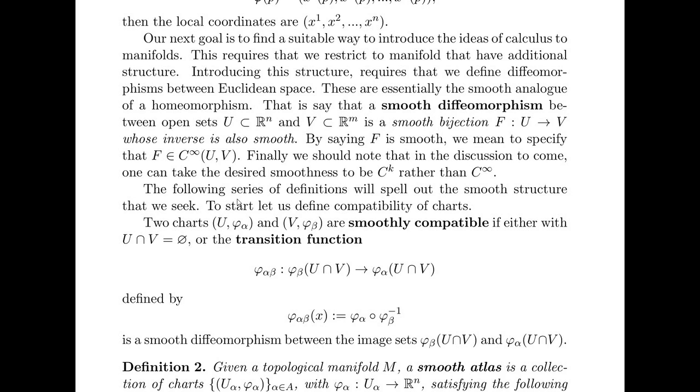The next following series of definitions will actually spell out the smooth structure needed for developing calculus. So let's start with compatibility of charts. Two charts (U, phi_α) and (V, phi_β) are smoothly compatible if either the intersection of U and V is empty or if the transition function is a smooth diffeomorphism between the image sets.